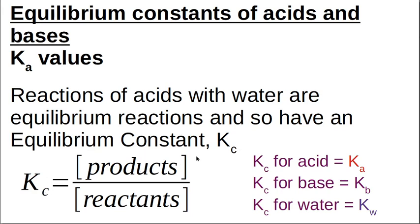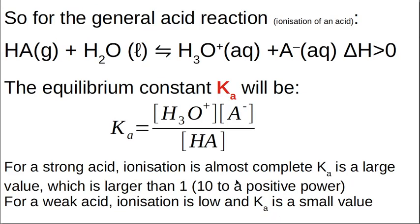The moment you have an equilibrium reaction, you can calculate an equilibrium constant Kc. Kc equals the concentration of products raised to the power in the equation, over the concentration of the reactants. We call Kc for an acid Ka, Kc for a base Kb, and for water Kw. The size of this equilibrium constant can tell you how strong an acid is, and we'll use these to calculate pH.